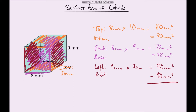So let's work out the total surface area. So 90 plus 90 is 180. 180 plus 80 is 260. Plus another 80 is 340. So let's just write that down — plus 72 plus 72. Well, 72 plus 72 is 144. So we just need to add 340 to 144.